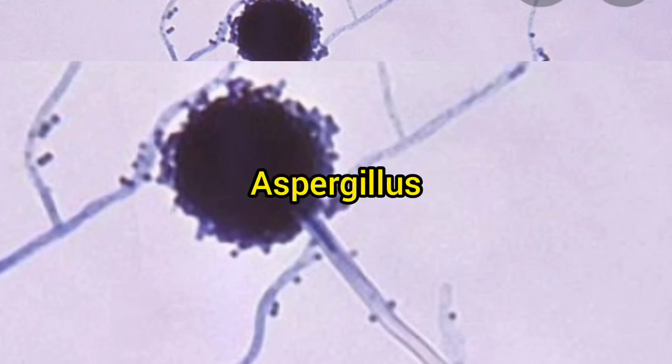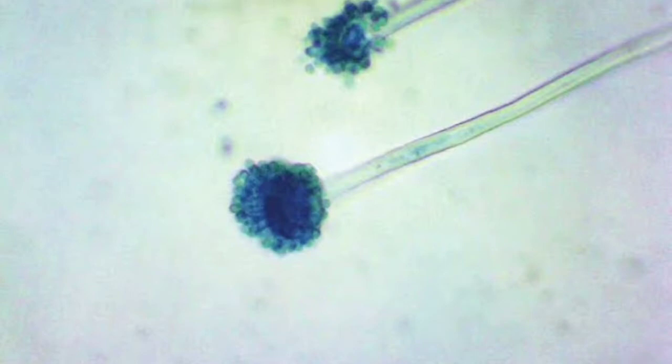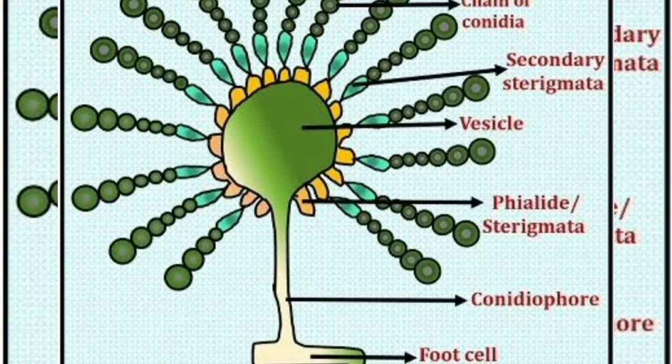Aspergillus. Aspergillum is an asexual performing structure that is common to all Aspergillus species. Around one-third of the species are also known to have an asexual stage. Aspergillus is defined as a group of the conidial fungi, i.e. the fungi in an asexual stage.